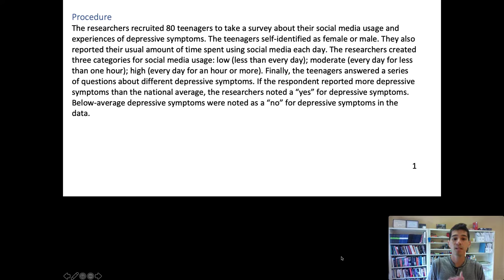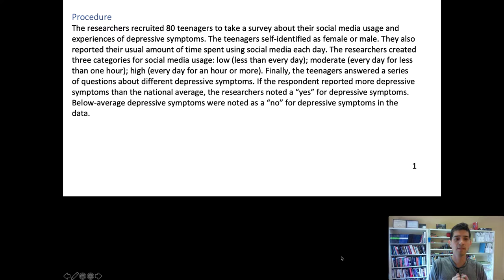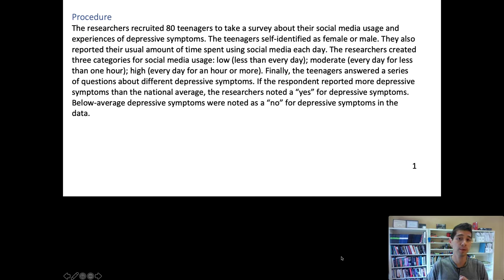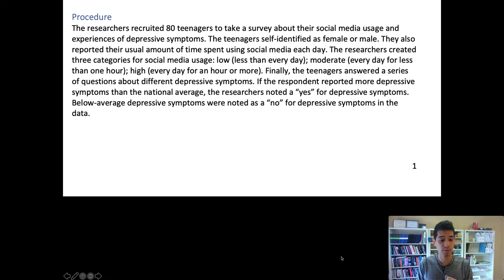For this particular dataset you'll analyze in the theory challenge, a 'yes' for depressive symptoms means the teenager experiences symptoms more than the national average, and a 'no' means they've been experiencing depressive symptoms less than the national average. So it turns into a yes or no measure for experiencing depressive symptoms.